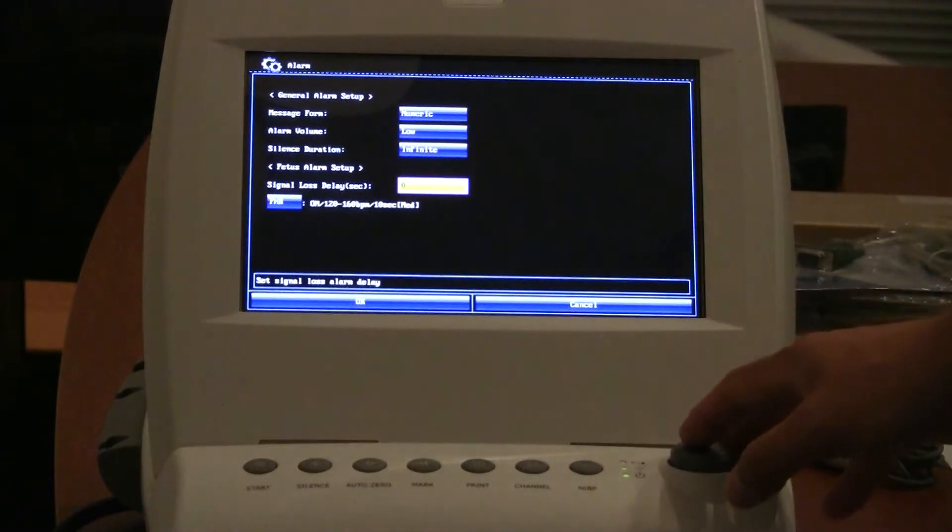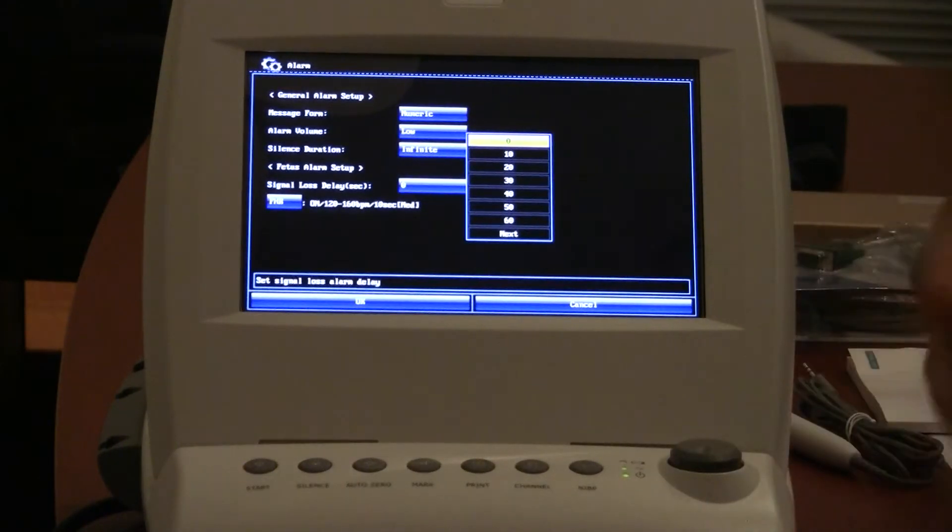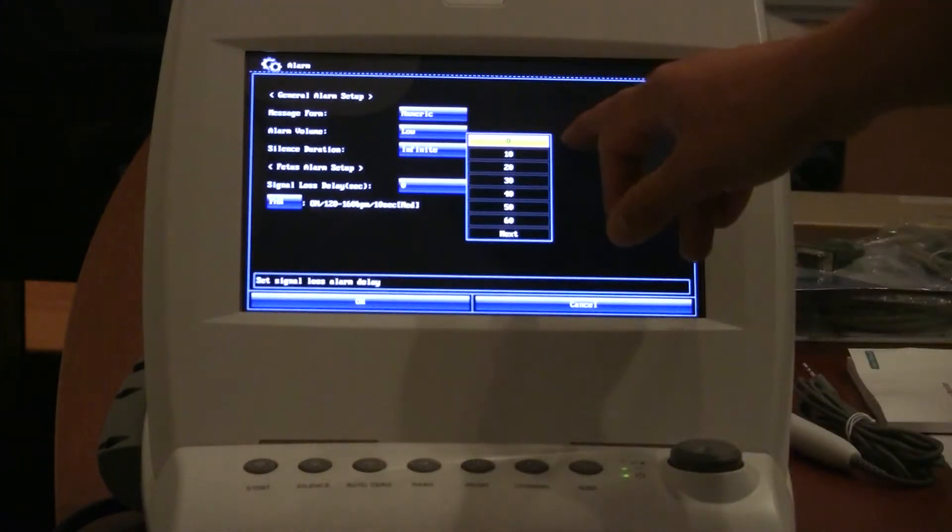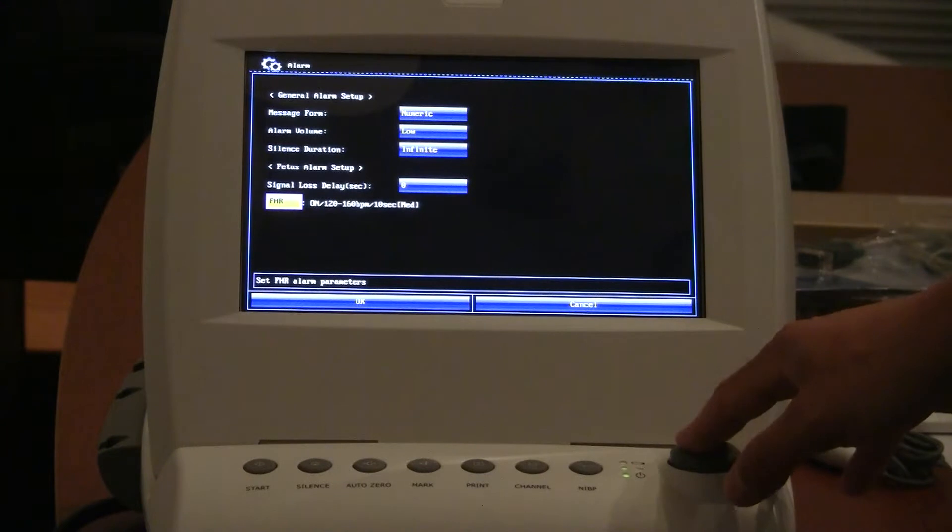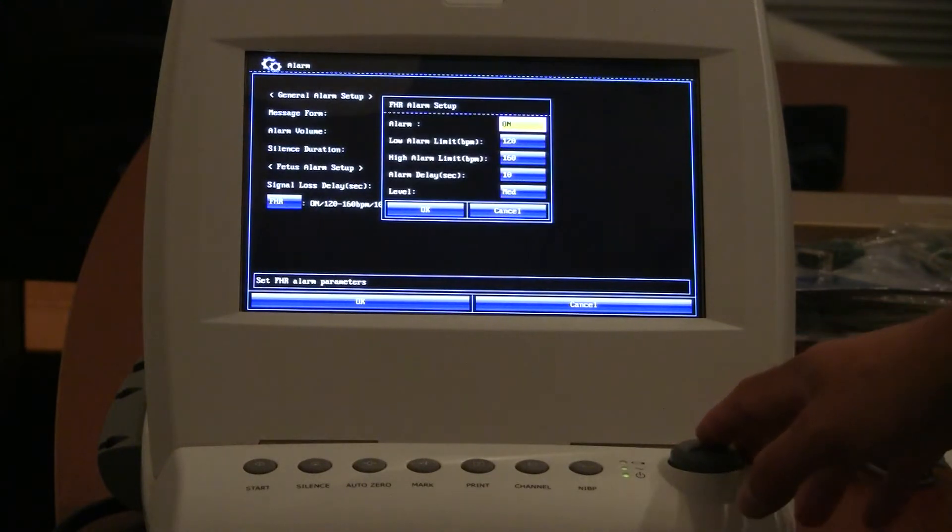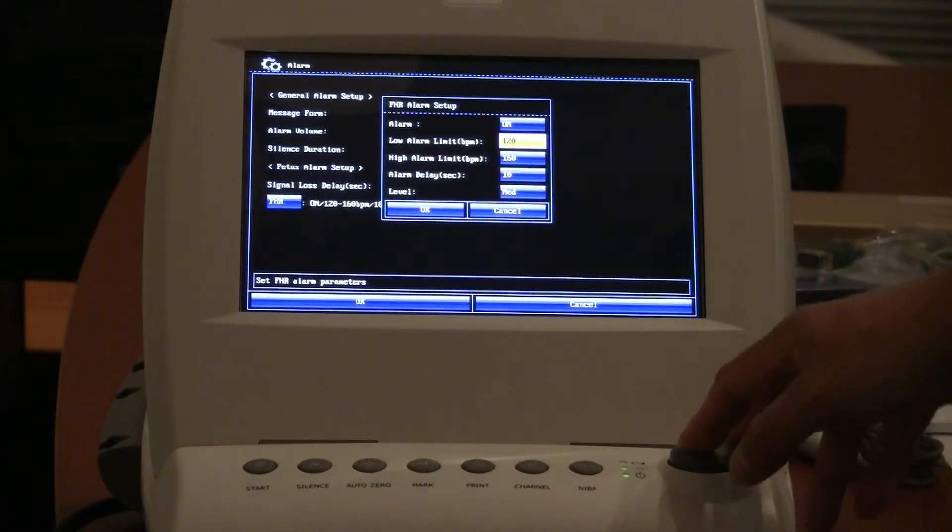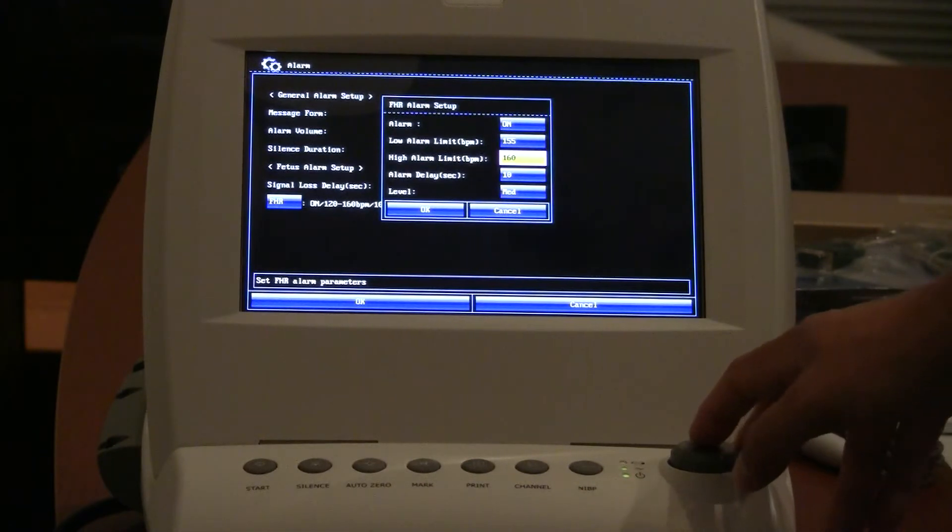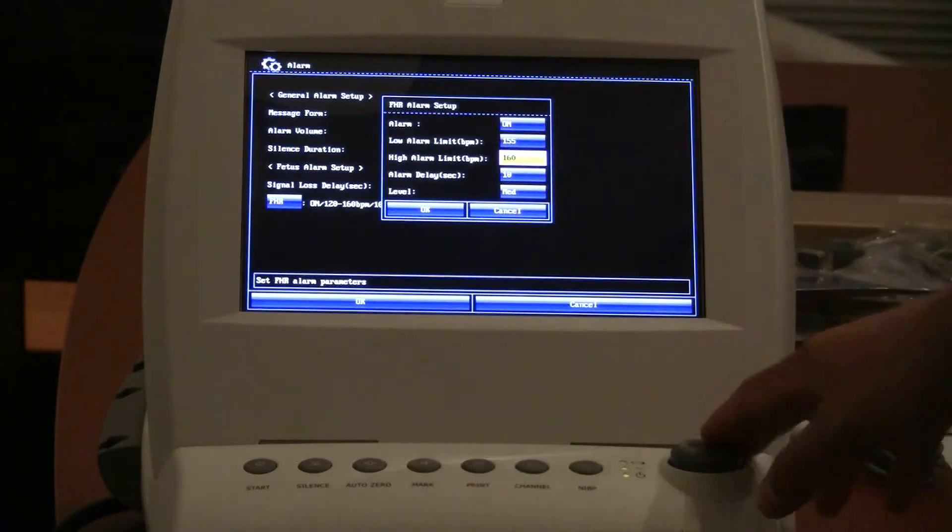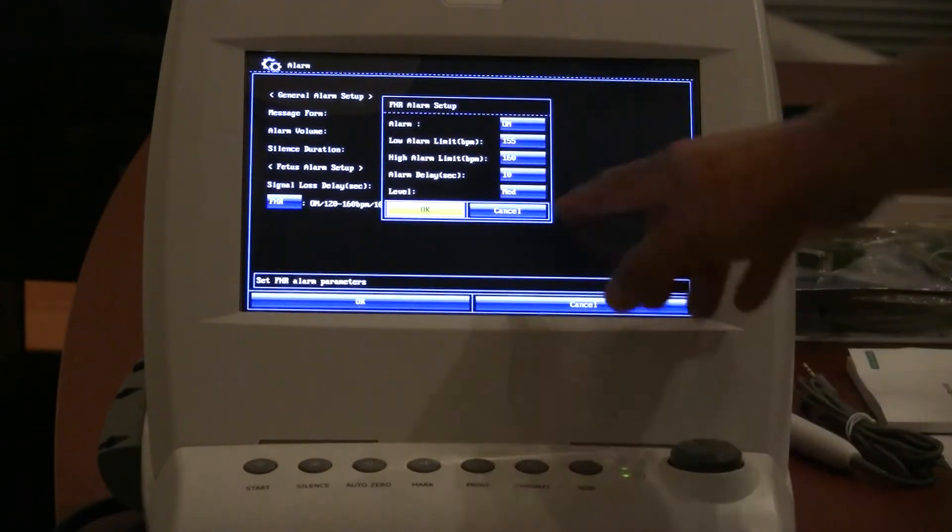Single signal loss delay: if mom moves around and your probes lose their positioning, you can either be notified immediately, which would be set to zero, or ten seconds up to a minute. And your alarm setup is on. You can set it here for your beats per minute if it goes below 120 or down to 95. You can set it however you like. I think we have this one set for a pretty wide range so that it doesn't continue to beep during our video here. Same thing with your high alarm, your alarm delay, like we mentioned, and your alarm volume.